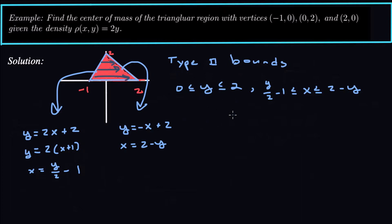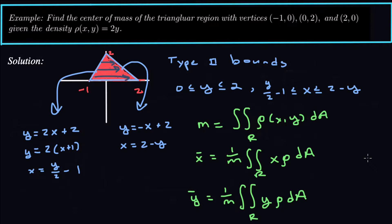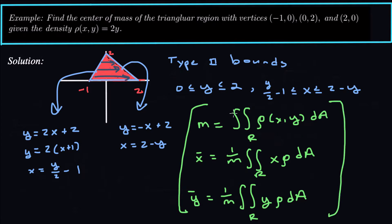Now we've got our type 2 bounds. Let's remember the center of mass formulas: the mass is the double integral of the density; x-bar is 1 over the mass times the double integral of x times the density; and y-bar is 1 over the mass times the double integral of y times the density. So we're finding the average values of x and y. Let's go ahead and calculate these double integrals.